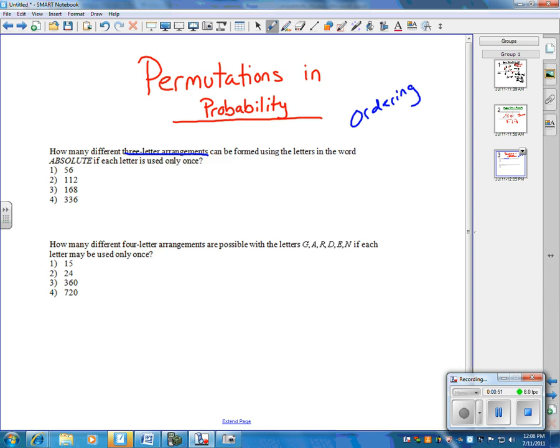For the first choice, we have eight available letters. After we do that and we remove that choice, the second choice we have seven. And then for the third choice, because we've taken out two now, we only have six. So, one way to do this is by multiplying because there are multiple events. Eight times seven times six. And if you do that, you're going to get the answer of 336, which is number four.